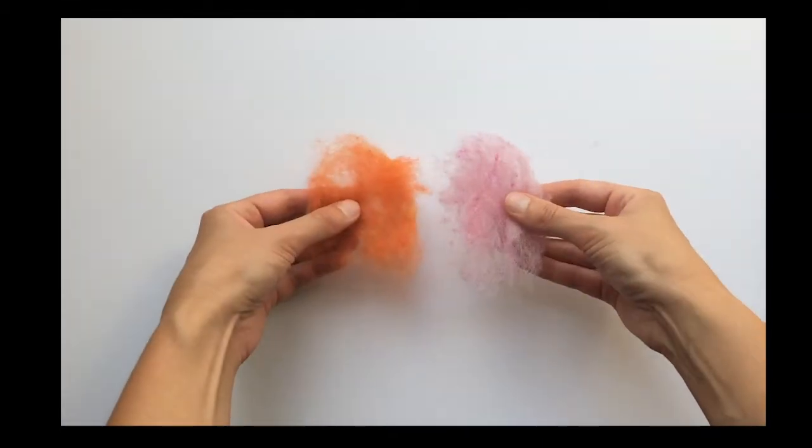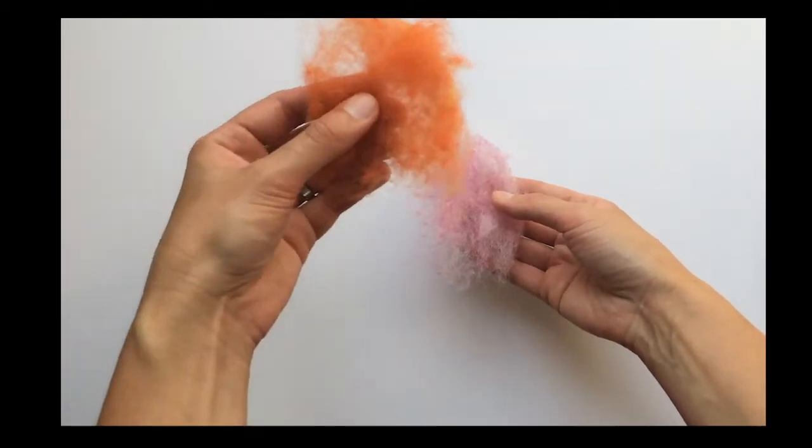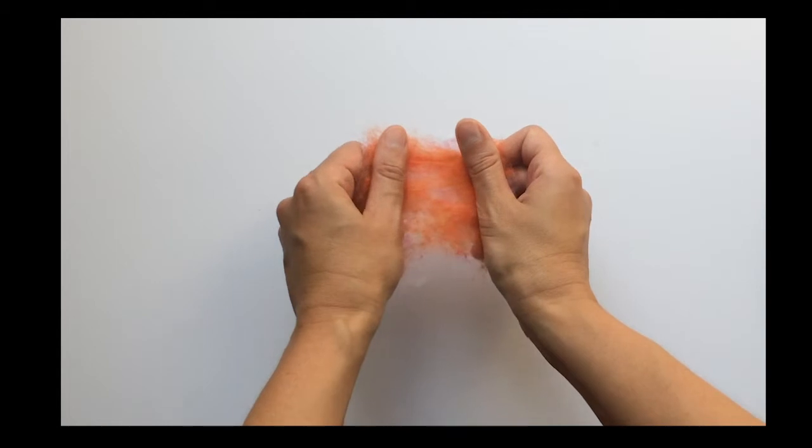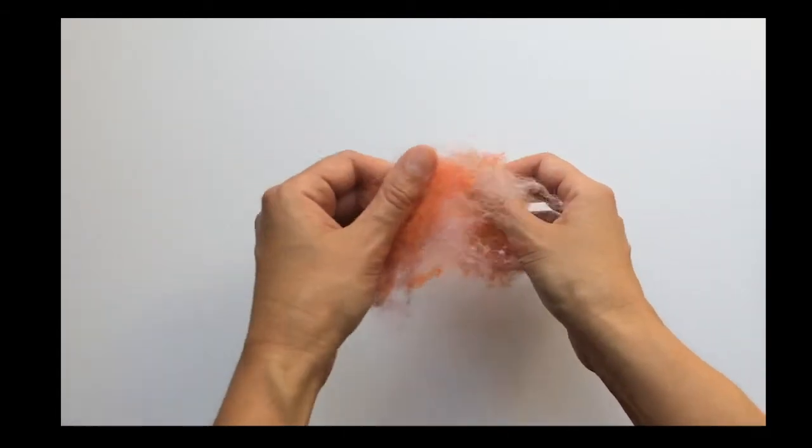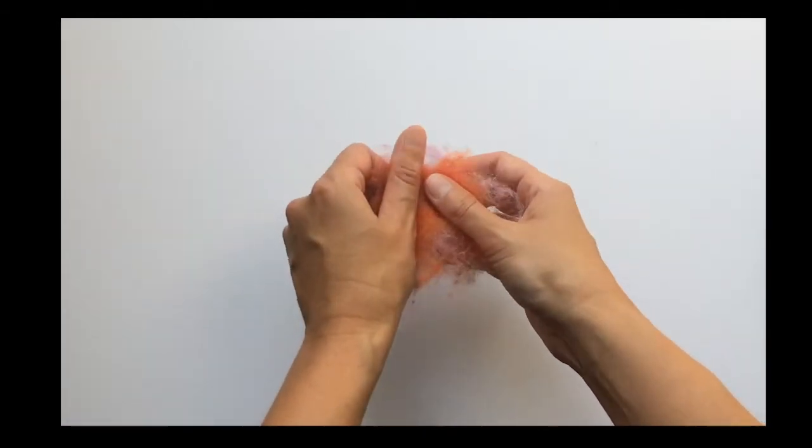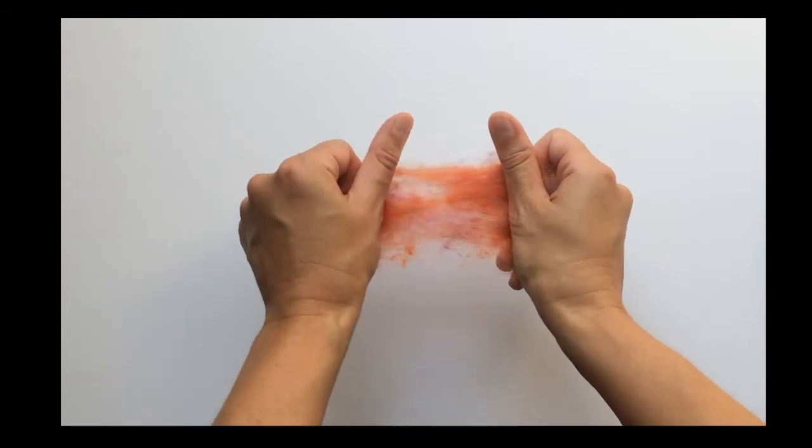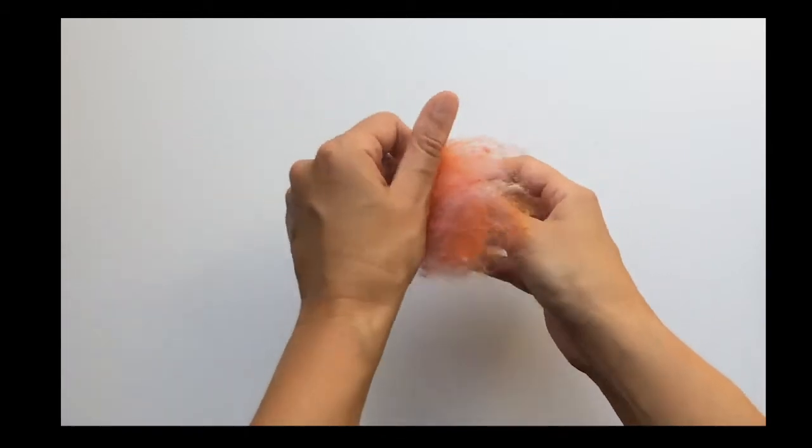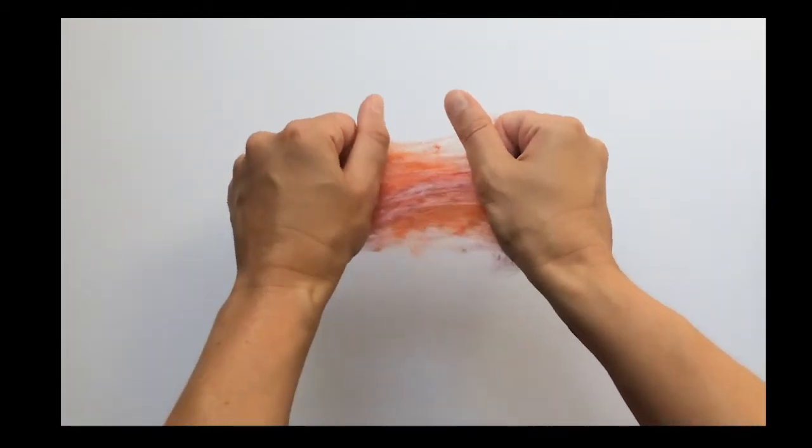What you do is you start by layering one on top of the other and then you're going to pull apart gently. Layer it again, pull apart gently. Layer it again, pull apart gently. So you're going to keep repeating this process.